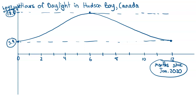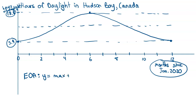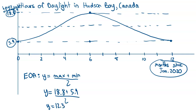To find the properties of this graph, first identify the equation of the axis: it equals the maximum plus the minimum divided by two — the average of the top and bottom values. Taking 18.8 plus 5.9 and dividing by two gives a value of 12.35. So y equals 12.35 is our equation of the axis.